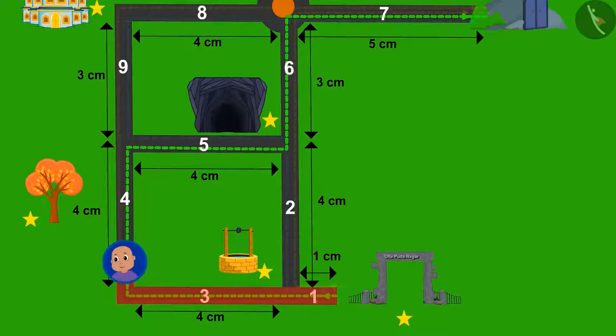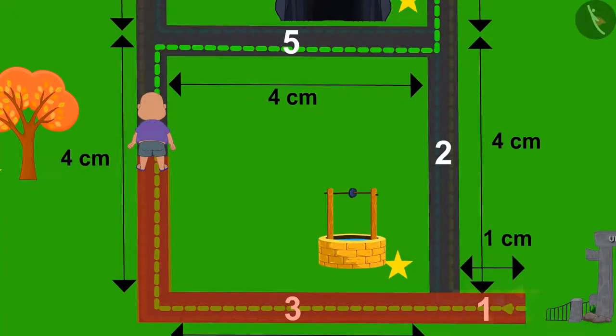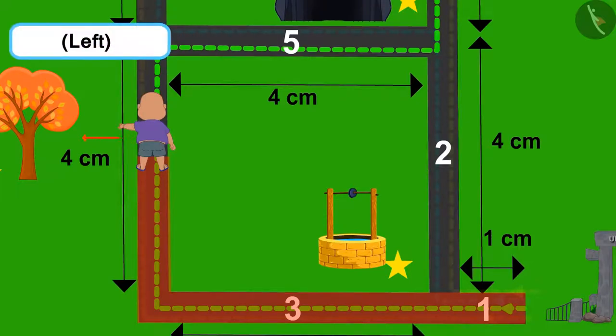Now, Bablu tried to go out of road number 3. If Bablu is on road number 4, then which side is the magical tree? The magical tree is on the left hand side of Bablu, which means it would be on the left.